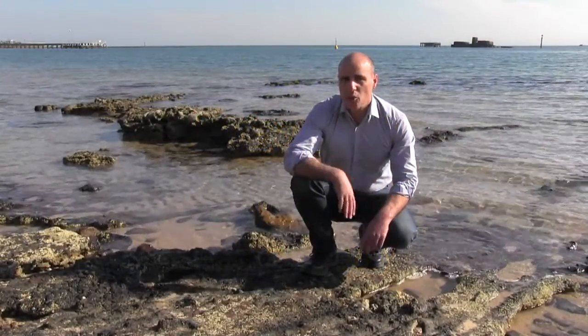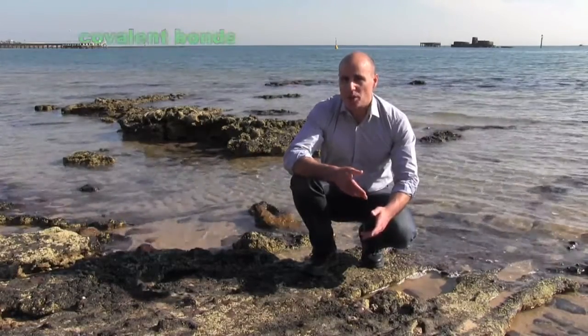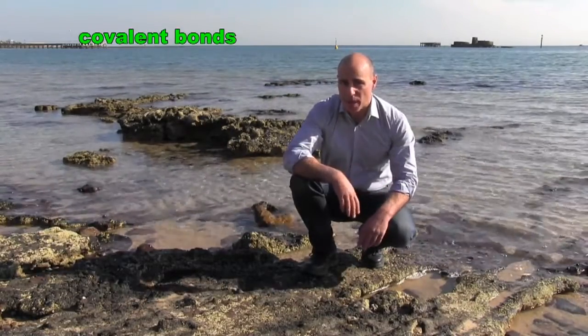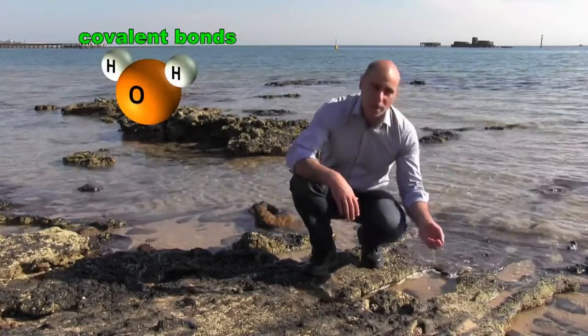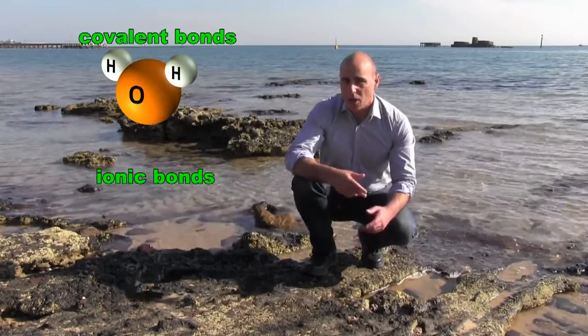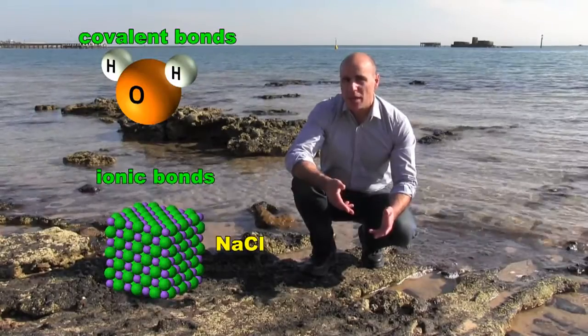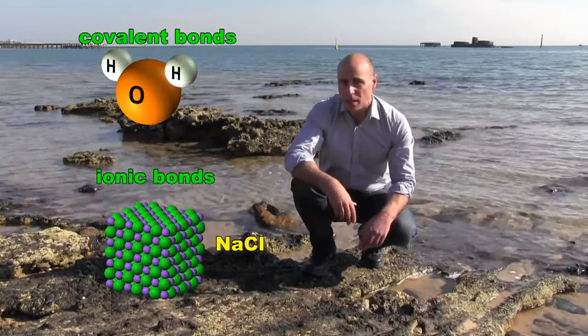It turns out that there are two ways that atoms can join together to form compounds. They can either form what are called covalent bonds with other atoms - water is one example where this happens - or they can form what are called ionic bonds with other atoms, like they do in salt, NaCl. In this episode, we're going to look at covalent bonding.